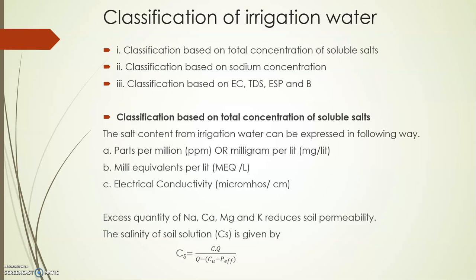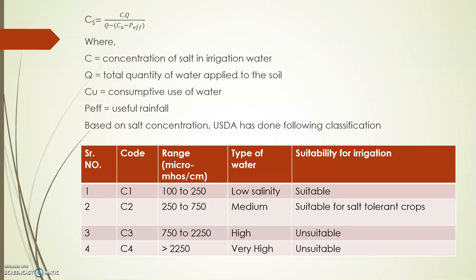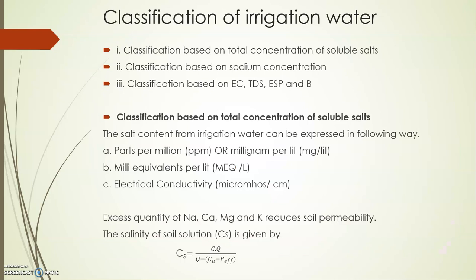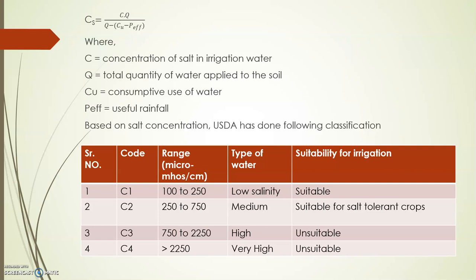Excess sodium, calcium, magnesium, or potassium reduces the permeability of the soil, so we need to find the salinity of the soil solution. The formula is: salinity of soil solution = (C × Q) / (Q − Cu − P_eff), where C is concentration of salt in irrigation water, Q is total quantity of water supplied to the soil, Cu is consumptive use (evaporation plus transpiration), and P_eff is effective rainfall.